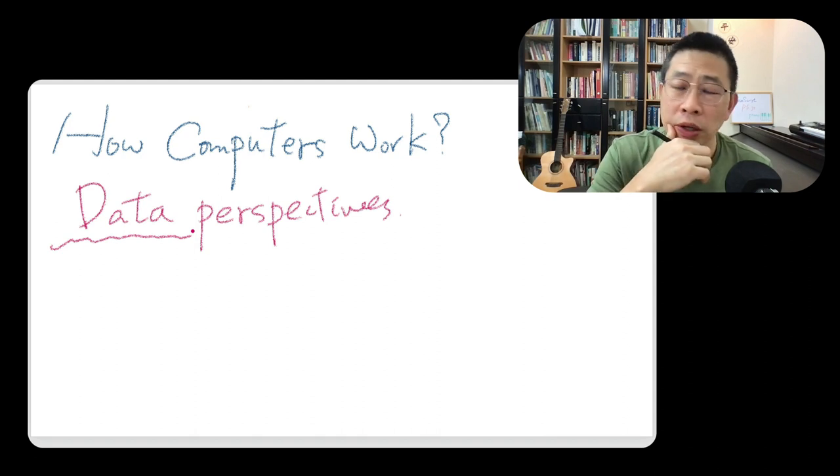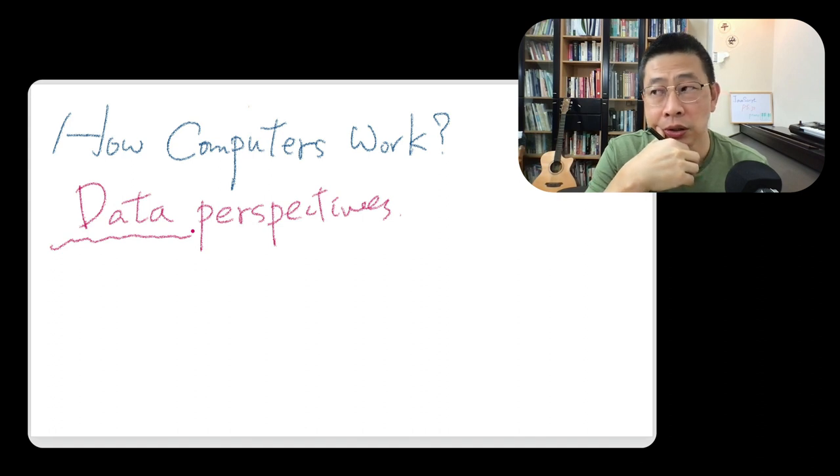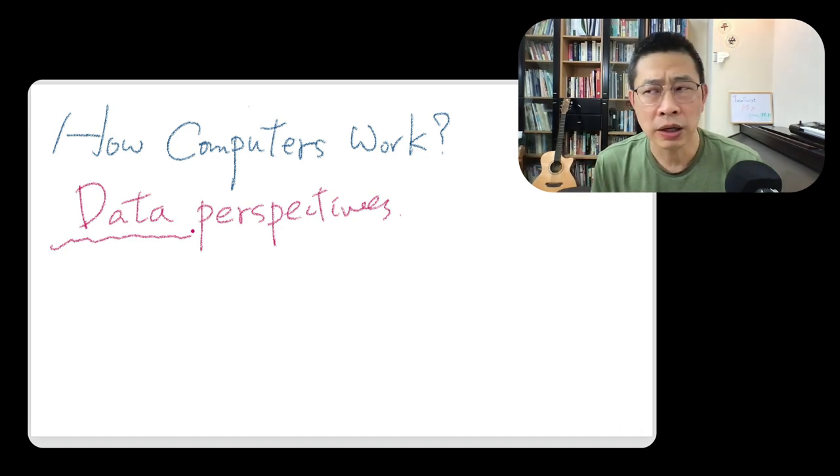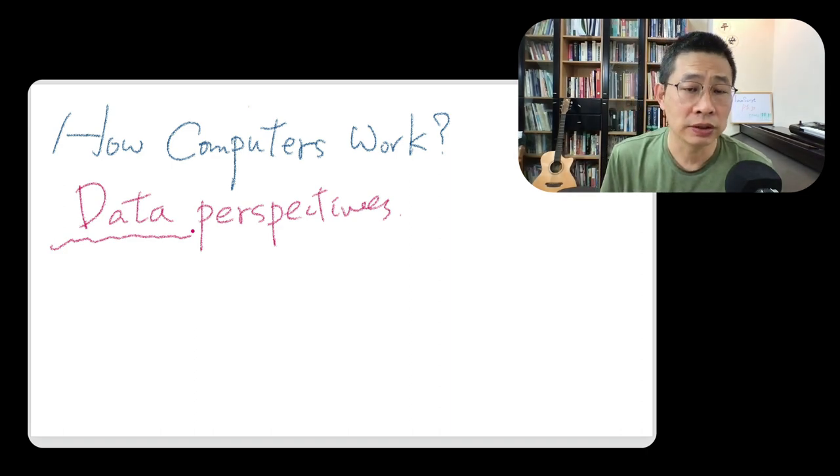So what exactly in computer store the data? And is the data just a data? Is the program as a kind of data? And what about different type of data? How they are stored?